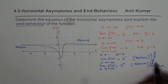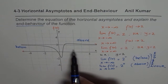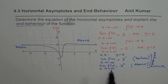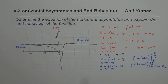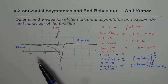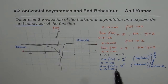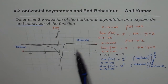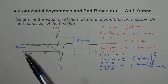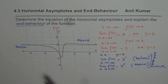End behavior means what happens to the graph of the function as you approach negative or positive infinity. I hope this point is absolutely clear. In coming videos, we will start with the equation, find the asymptotes, and determine the behavior of the function near horizontal asymptotes — whether they approach from above or below. In the next video, we will take up vertical and oblique asymptotes. Thank you.